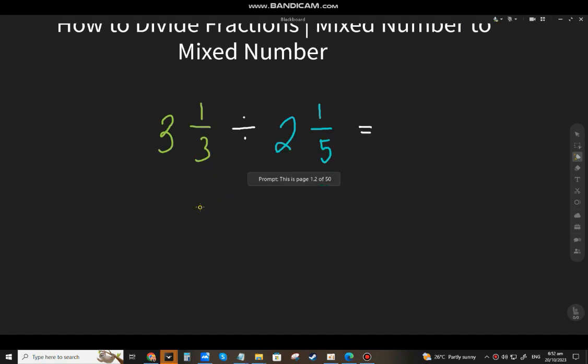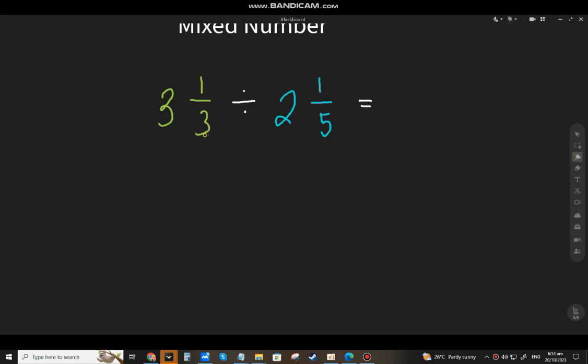So let's change it. We have 3 and one-third divided by 2 and one-fifth. 3 and one-third, that will be 3 times 3, that will be 9 plus 1, that will be 10 over 3. 2 and one-fifth, that will be 5 times 2, that will be 10 plus 1, that will be 11 over 5.